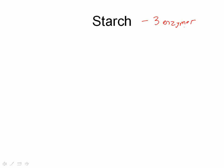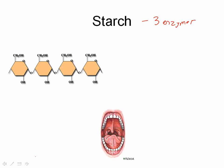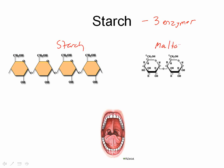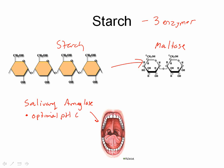So let's talk about starch first. Starch has three enzymes. The first one we're looking at is starch being broken down into maltose, and the enzyme that does this is called salivary amylase. As you can see here, this occurs in our mouth — so the first time starch or carbohydrates are broken down is in the mouth. It has an optimal pH of around 6 to 7.